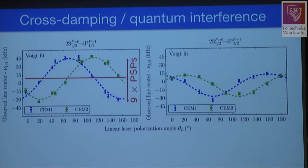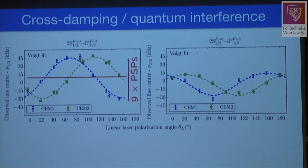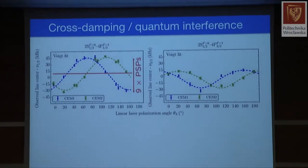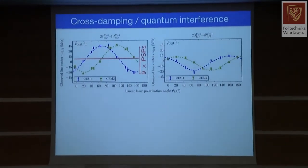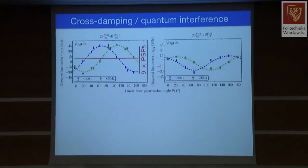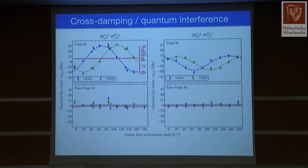In the case of our 2S-4P transition, we look at photons corresponding to pi-polarized, sigma-plus, and sigma-minus polarized radiation, which have different angular patterns. As a result, the Fano interference distortions are different in different emission directions. As we rotate the polarization of the exciting laser, there are line shifts — nine times the magnitude of the discrepancy due to the proton size. If we would ignore this it would be very bad, but since we now understand it we can model it.